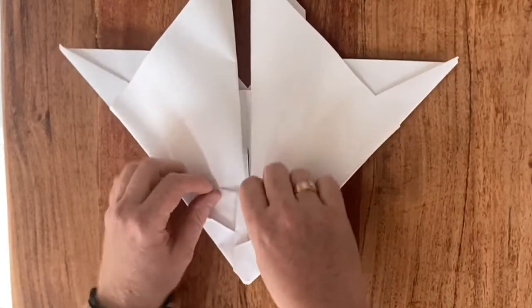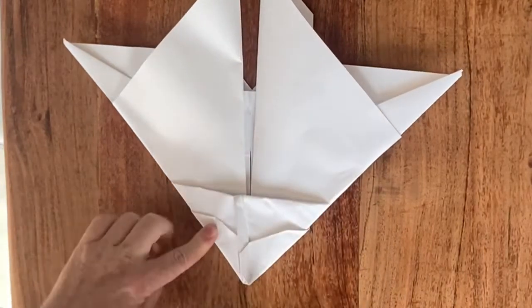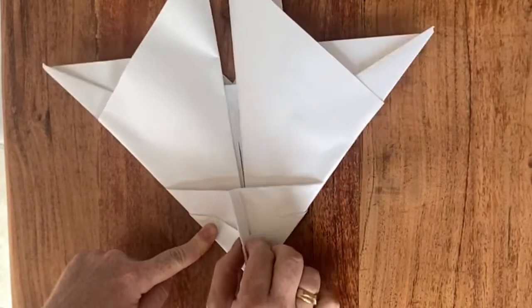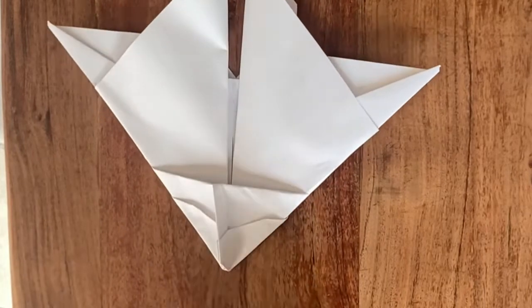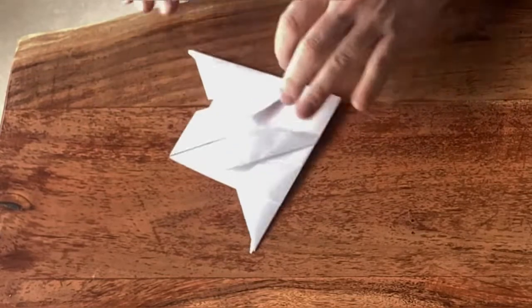Then fold this corner in on itself like so. And then you can just pull it up. And if you want to use a paper clip, you just snap it on here on this part. Then we're going to flip over the paper again.